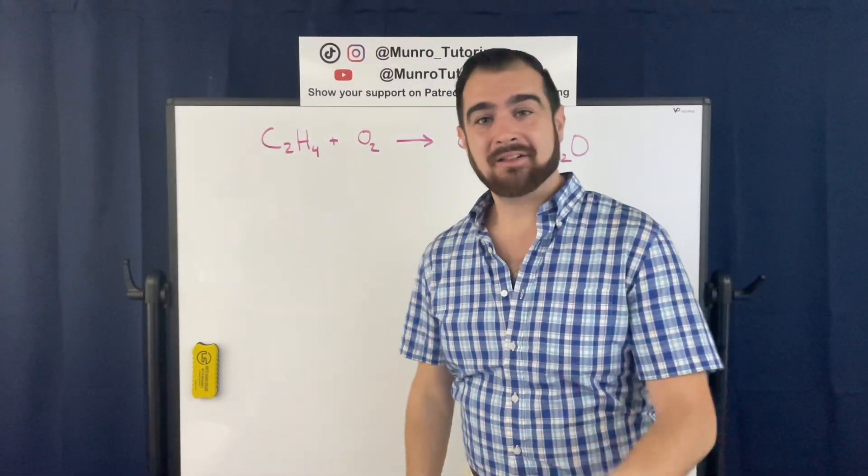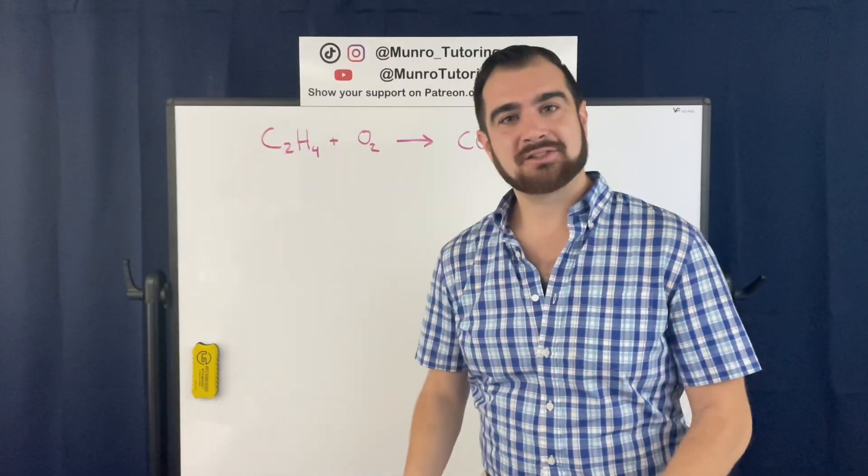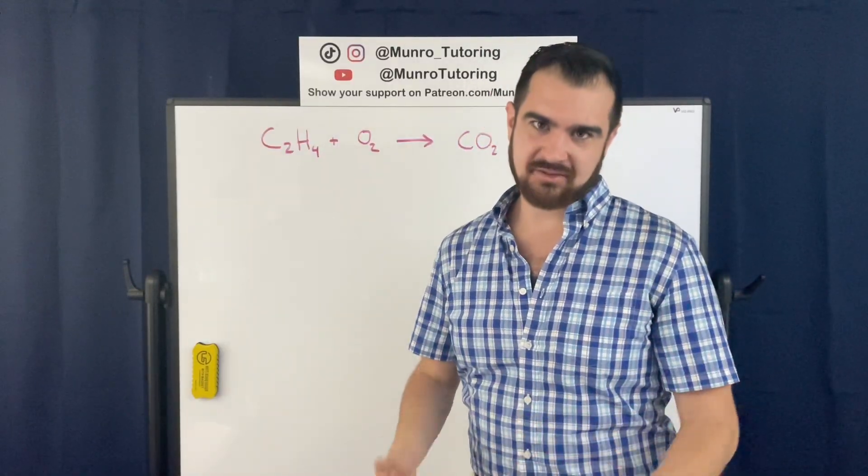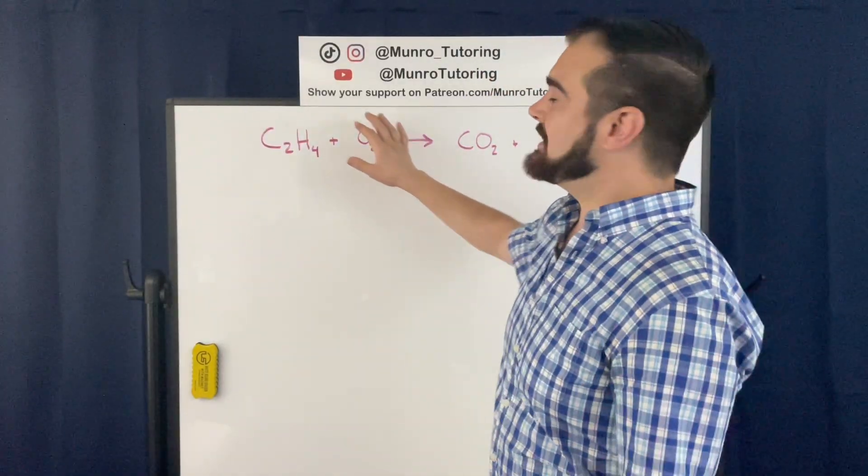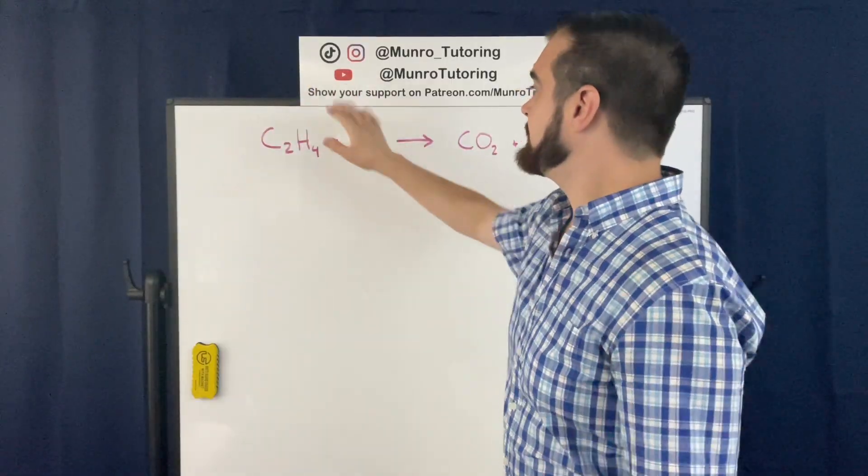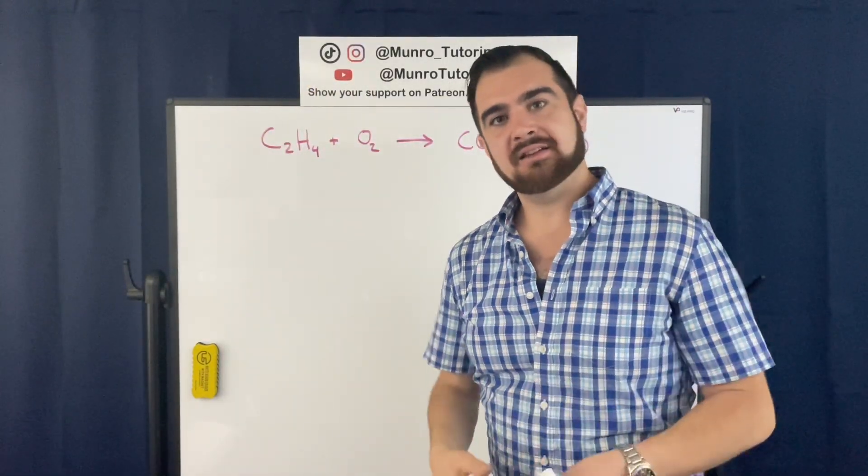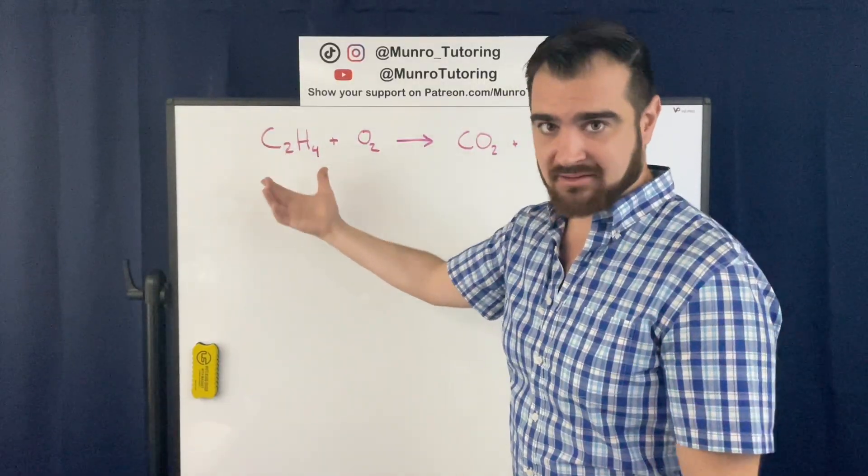All right, let's balance this chemical equation. So before we get into the exact solution, just remember what the whole idea of balancing chemical equations is about. When we look at this reaction, we have what essentially amounts to a before and after, or at least that's how we can think about it. And so the idea is these are our starting materials, right? Our reactants.